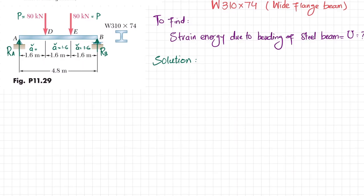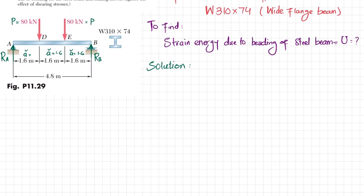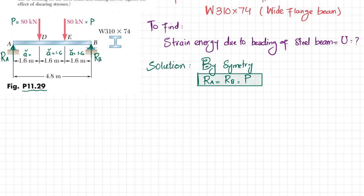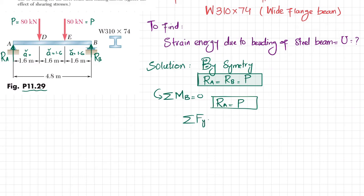From the figure you can see that the beam is symmetrical, so by symmetry R_A equals R_B equals P. You can confirm this using equilibrium: sum of all moments about point B equals zero gives R_A equal to P, and sum of all forces along the y-axis equal to zero gives R_B also equal to P.